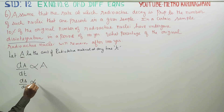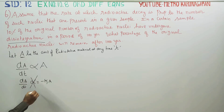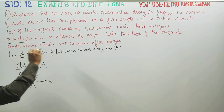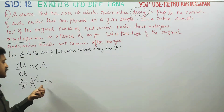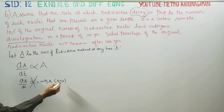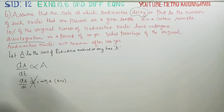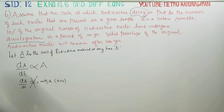When dA/dt is proportional to A, how do we decide the sign? Decay means the amount is decreasing, so we use minus. Increase is plus k, decrease is minus k, where k is greater than zero. If k were a negative number, then minus into minus would give plus, meaning decay would become growth — so k is always taken as positive.